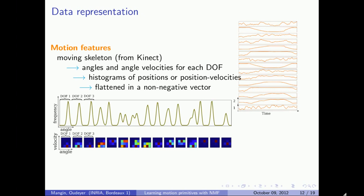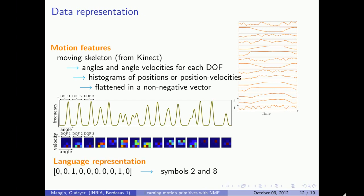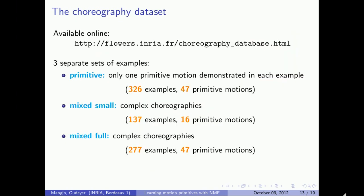Once we have these histograms, we flatten them to obtain a non-negative vector representing the motion data. The linguistic representation is very simple: since symbolic annotations describe the choreography, we use a fixed-length vector of binary values indicating whether each symbol is present or not in the description.